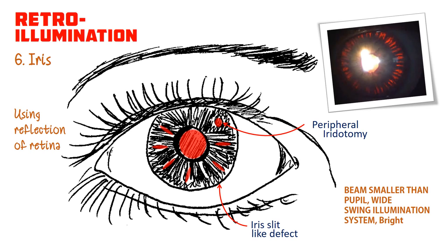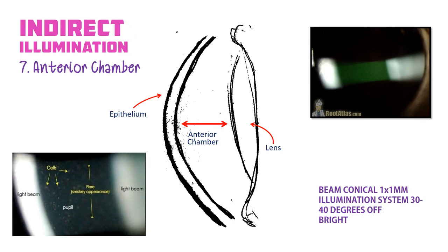The beam is smaller than the pupil, about 5 to 7 millimeters wide, and what you need to do is swing your illumination system until you see the red reflex through the pupil. We then need to look at the anterior chamber to make sure it's clear — no cells or flare — and I'm still using the cross-section at this stage. Only when we suspect the anterior chamber is affected, for example in uveitis or retinal detachment where we may have tobacco dust, will indirect illumination become useful. This requires a conical beam of one millimeter by one millimeter, bright, with the illumination system 30 to 40 degrees off. You have a beam of light reflecting off the iris and another reflecting off the cornea, and you're using the dark black background of the pupil to see if there are any cells or flare present.